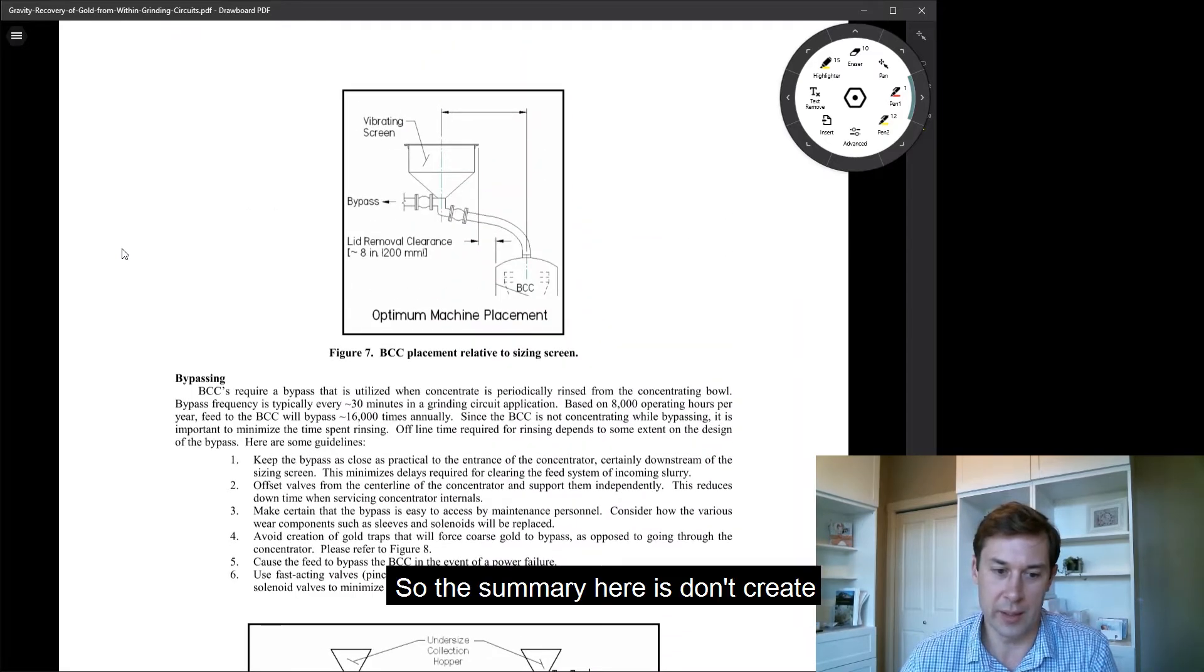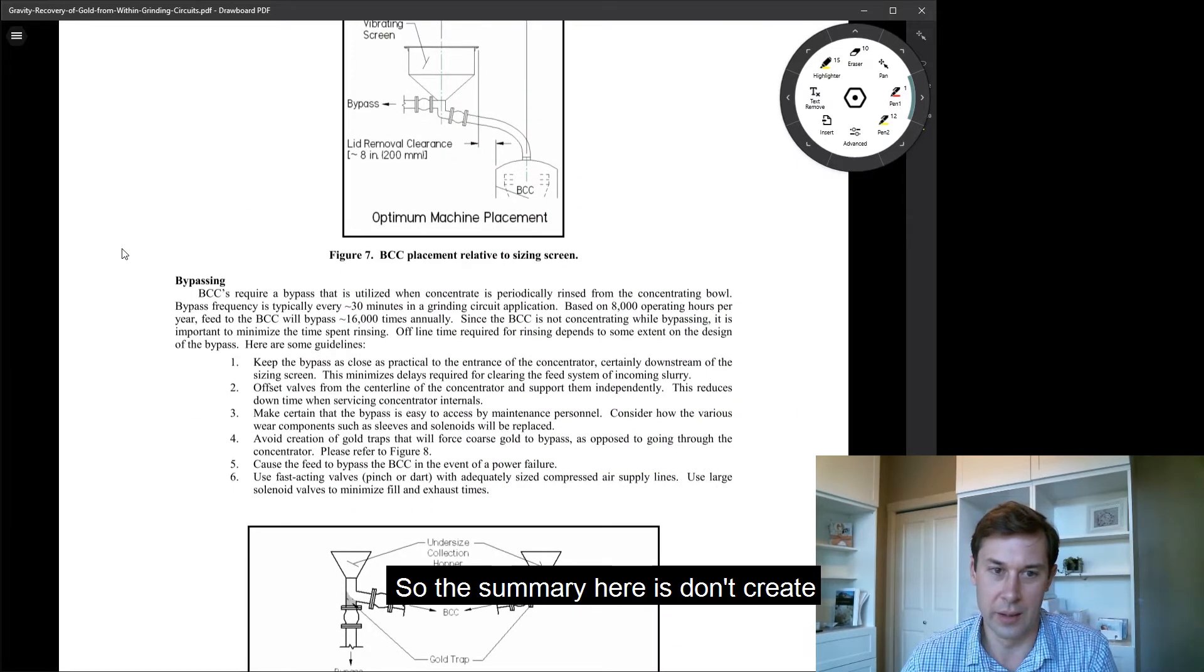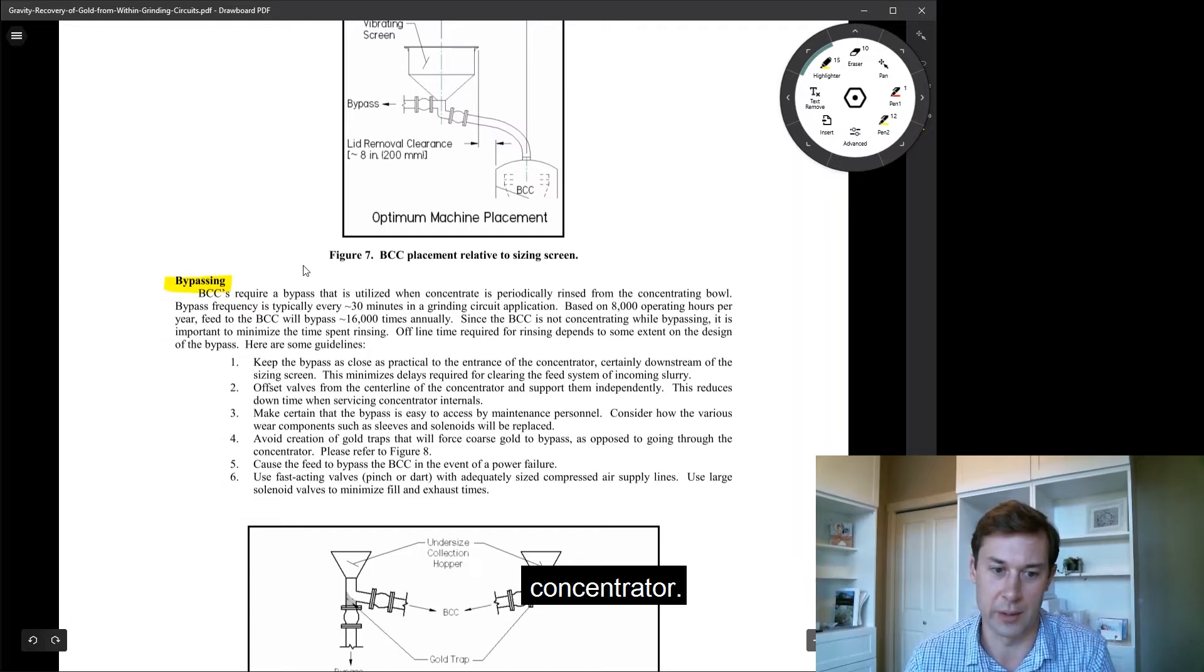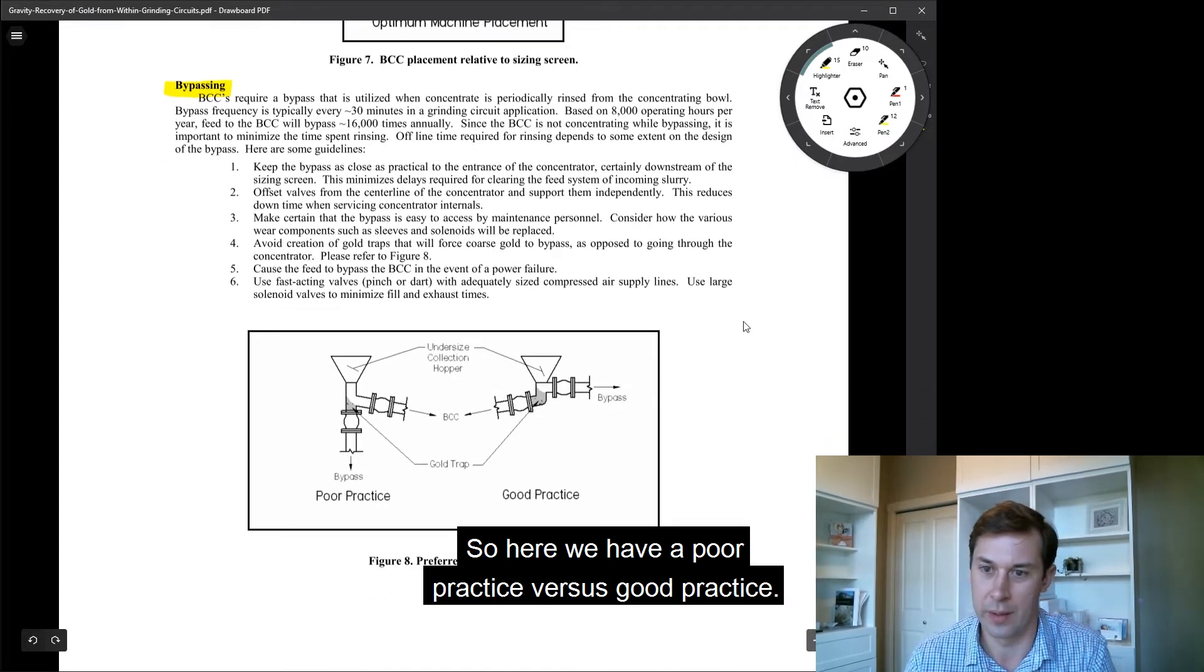Bypassing. So the summary here is don't create gold traps that are going to bypass the concentrator. So here we have poor practice versus good practice.